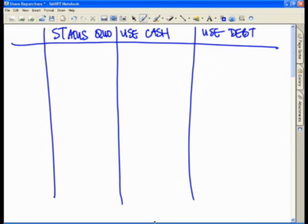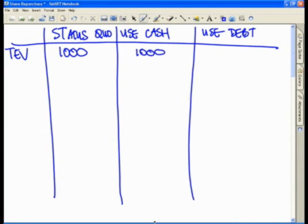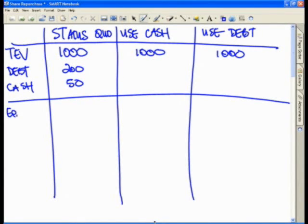Starting off with the basic valuation concepts, let's look at total enterprise value. Let's just assume that the total enterprise value is simply $1,000 for each of these three scenarios. Their debt in the status quo scenario, let's just say it's $200, and their cash on the books is simply $50. This gives you an implied equity value of simply $850. How did this $850 come about? Don't forget, equity value plus debt minus cash equals total enterprise value. So therefore, $1,000 minus the debt plus the cash will get you your $850.